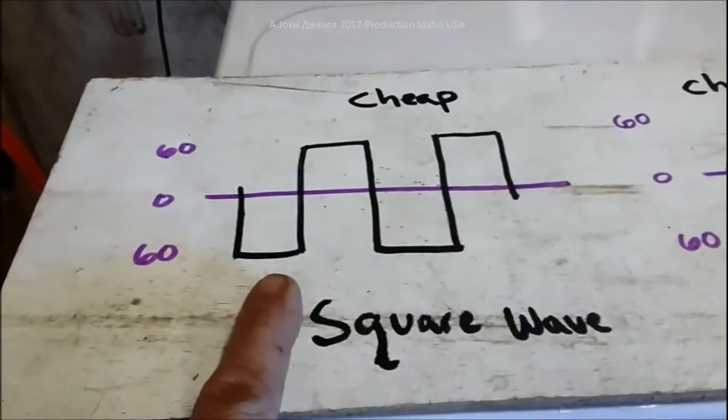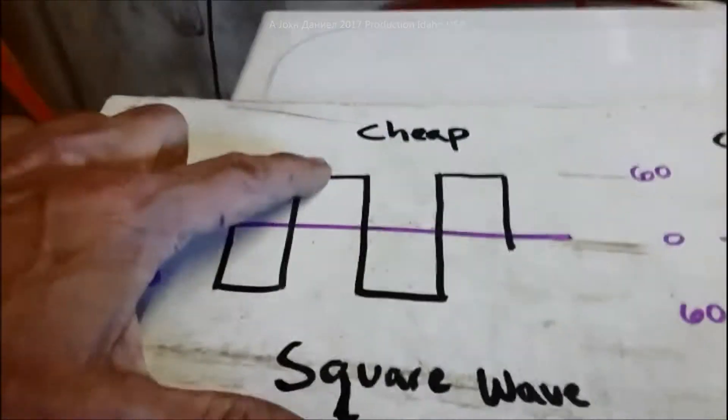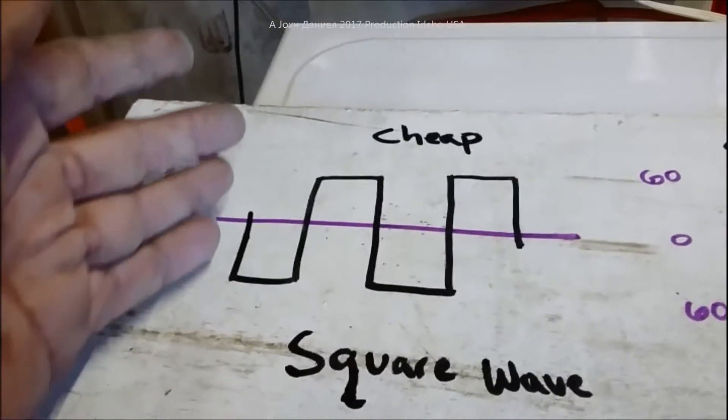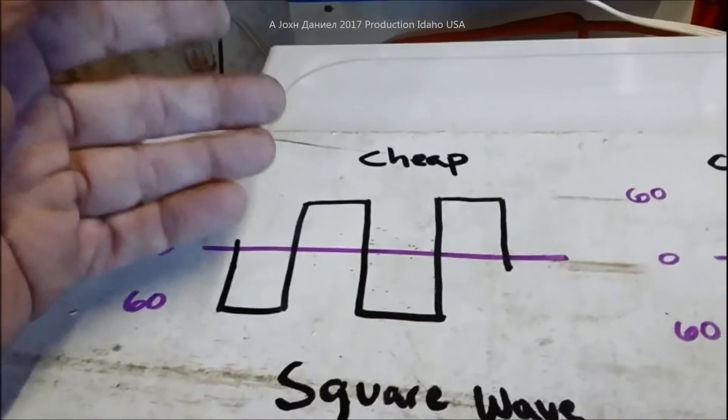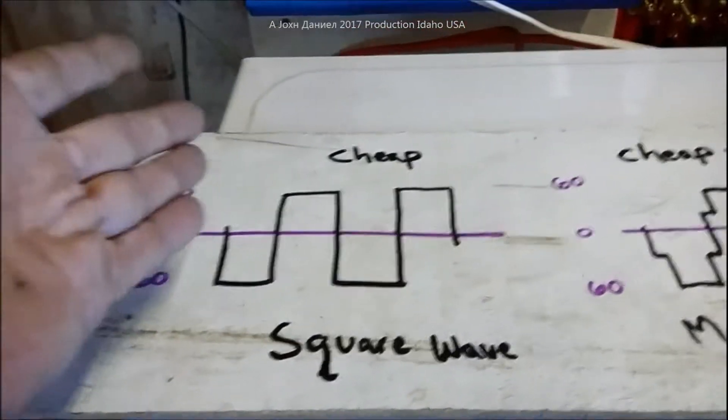Now this square wave is what you're going to find in something like Duracell, the older Whistlers, the older Cobras, things like that, and quite a few of the brand new stuff that's the Chinese made with the pretty little China girl sitting next to it, 6,000 watt.